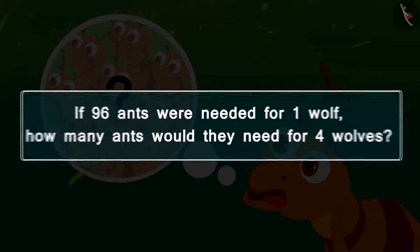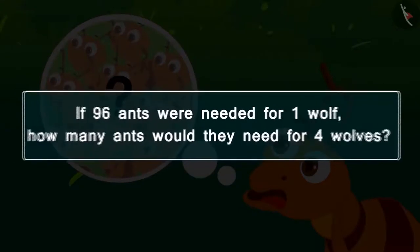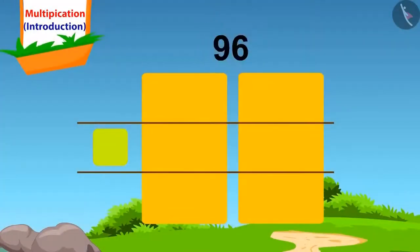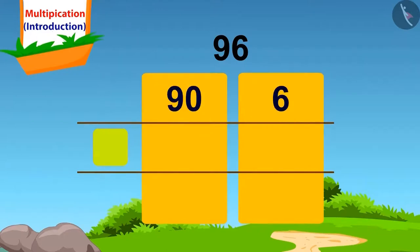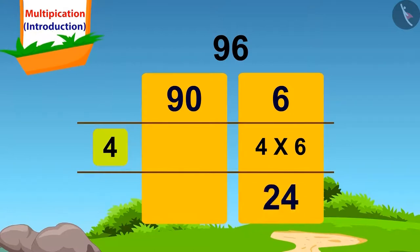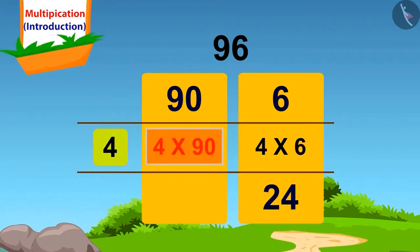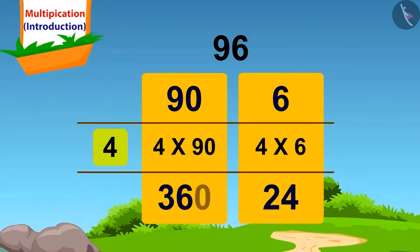Can you help the ants by solving this multiplication question? Let's do it together. How do we split 96? 90 and 6. We will first multiply 6 of 96 by 4. 4 times 6 is 24. We will write this answer here. Now we will multiply 90 by 4. 4 times 90 — just by placing a 0 next to the answer of 4 times 9, which is 36, we will get the answer 360.